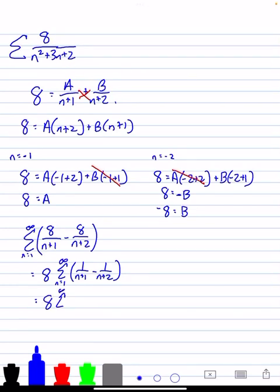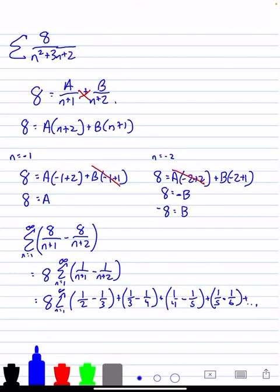If we were to plug a 1 in, because we're starting at 1, that would be 1 half minus 1 third. If we were to plug a 2 in, that would give us 1 third minus 1 fourth. If we were to plug a 3 in, that would give us 1 fourth minus 1 fifth. And we're going to plug in a 4. That would give us 1 fifth minus 1 sixth. And it would just go on to follow.